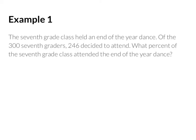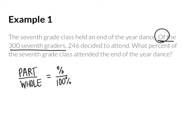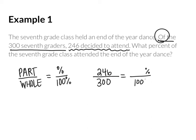Our first example: the 7th grade class held an end-of-the-year dance. Of the 300 7th graders, 246 decided to attend. What percent of the 7th grade class attended the end-of-the-year dance? When we set up our ratio, we're going to compare the part to the whole, then set that equal to the percent ratio — some percent out of 100%. In our problem, the keyword 'of the 300 7th graders' shows what our whole amount is, and 246 decided to attend — that's our part. We need to figure out what percent that would be out of 100%.